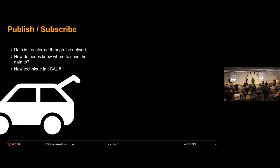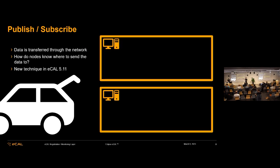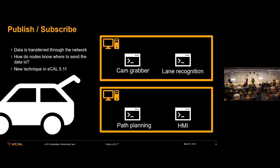eKAL comes from a rapid prototyping environment. It is a middleware and we use it for rapid prototyping of autonomous driving systems. If you open the trunk of our cars, you will find one or more PCs. Those PCs are maybe running Windows, usually Linux, sometimes also serious automotive systems like QNX. And on those PCs, we have separate nodes — all parts of our autonomous driving application run as separate eKAL nodes.